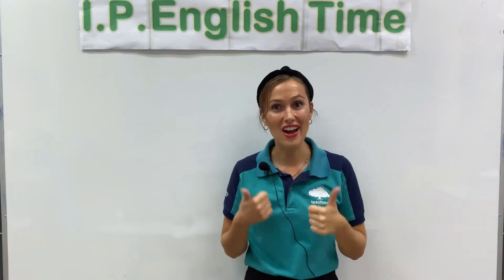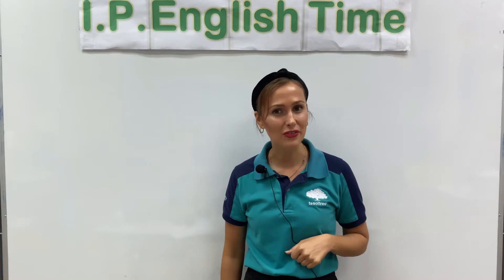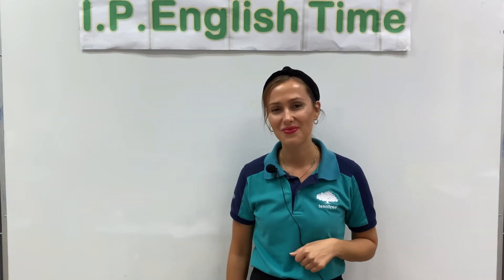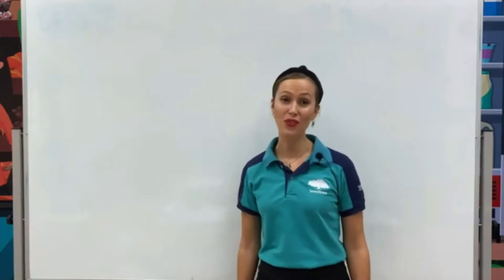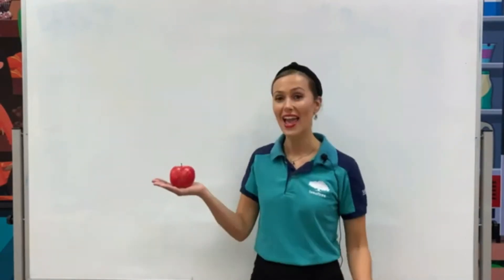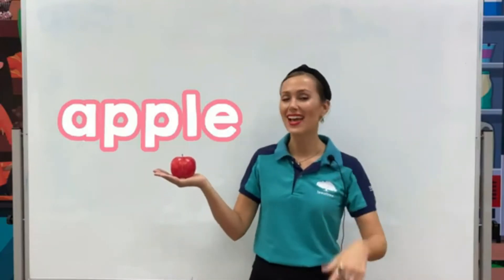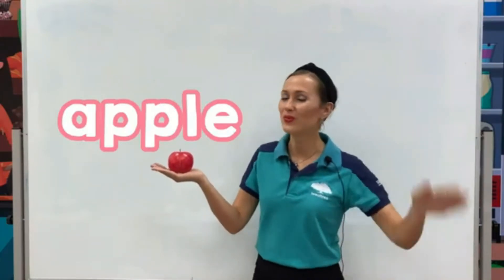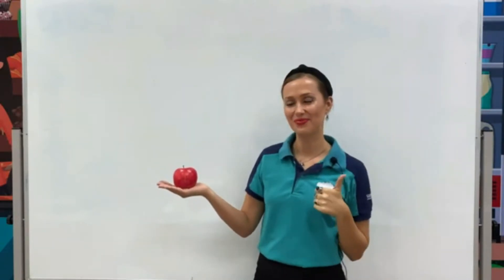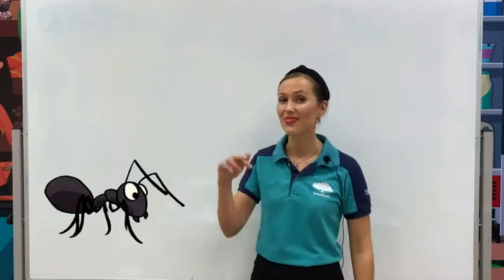Yes, kids, well done! Now it is time to review the words we've learned for letter A, B, and C. A is for Apple. Can you repeat? Eh, eh, Apple.